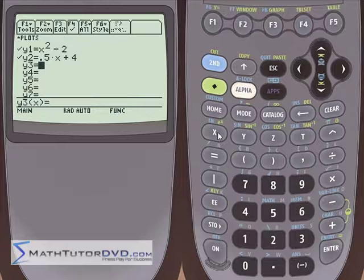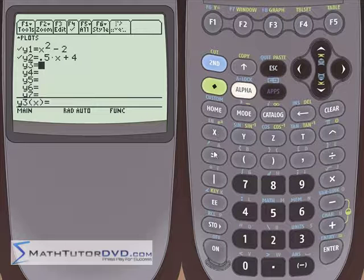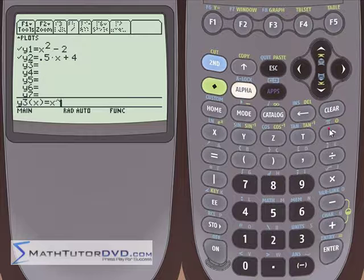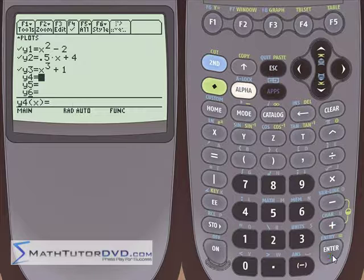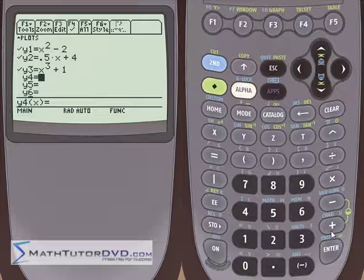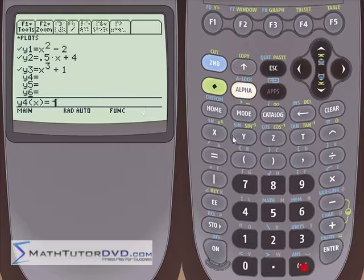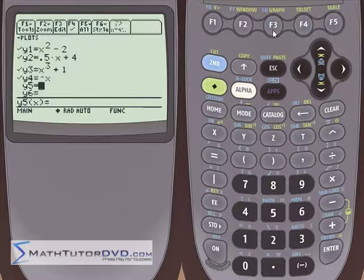Let's put in equation three here. Let's do x to the third power plus one. And let's put another equation in there. We'll do negative x. Y is equal to negative x. So now we have four equations. And let's go ahead and graph all four of them.